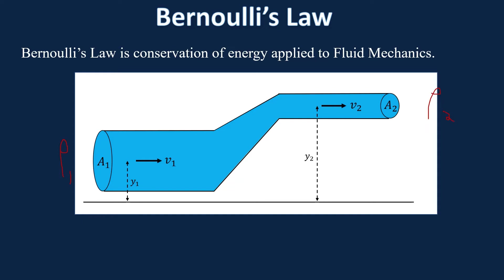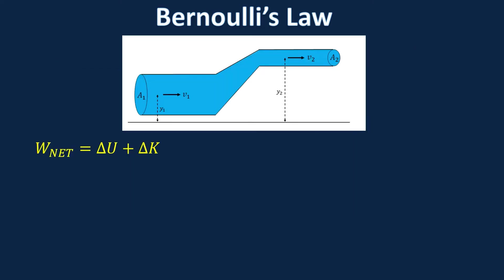There's a change in energy as it goes from one to two: it's going to increase potential energy because part two is higher, and it's also going to increase kinetic energy because part two is smaller, so the fluid goes faster. So we have work being done and a change in energy, and we're going to use conservation of energy. The net work done by conservative forces equals delta U plus delta K — the change in potential energy and the change in kinetic energy from one to two.